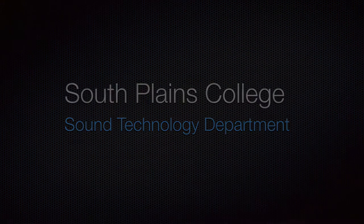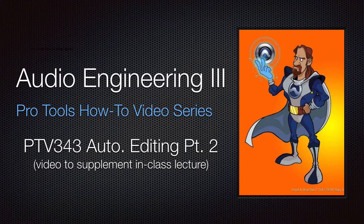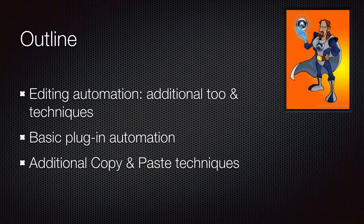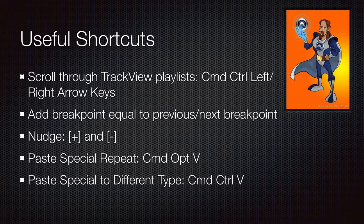Hello, this is Chris Neal from South Clance College. Welcome back to my Pro Tools How-To Video Series. This is the second video on basic automation editing. We'll be covering some additional automation editing features and tools not covered in the last video — some basic plug-in automation and additional copy and paste features. Shortcuts will be shown at the bottom of the screen; Mac-to-PC conversion is available online or at the end of this video. Useful shortcuts include scrolling through auto-playlists, adding breakpoints equal to the previous and next, nudging with the nudge keys, and a couple of paste special functions.